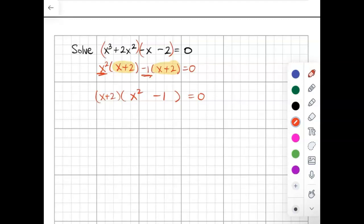So then you're going to set each of these equal to 0. So you're going to have x plus 2 equals 0. Subtract 2 to the other side and you get negative 2 as a solution.